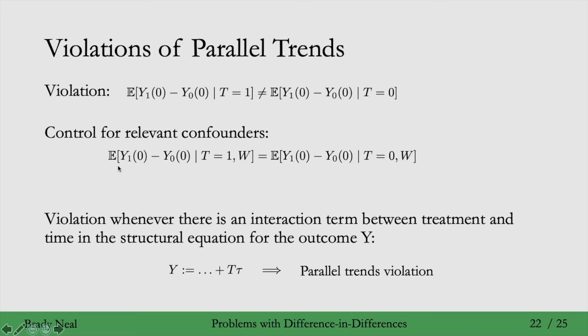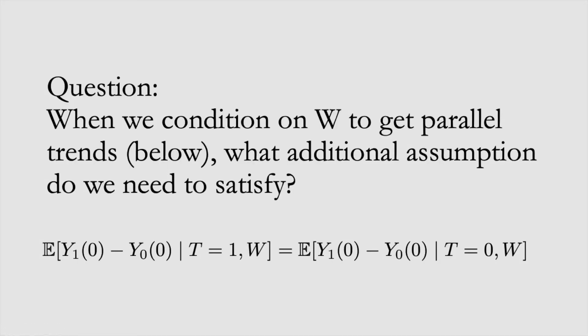And so consider this one where we're conditioning on W here to get parallel trends. What would we need to additionally assume? So when we condition on W to get parallel trends, that's this equation I've just replicated here, what additional assumption do we need to satisfy now that we're conditioning on W?